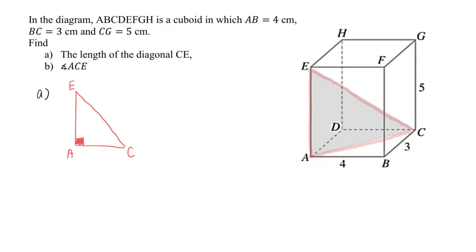To get the length CE, first I know AE is 5 because this is a cuboid—if CG is 5, this is also 5. But wait, how about this triangle here at the base? Is this a right angle triangle? Yes it is, because the base is a rectangle.